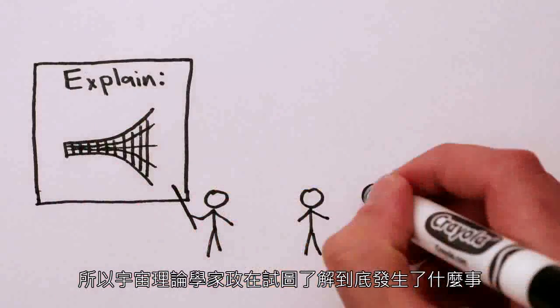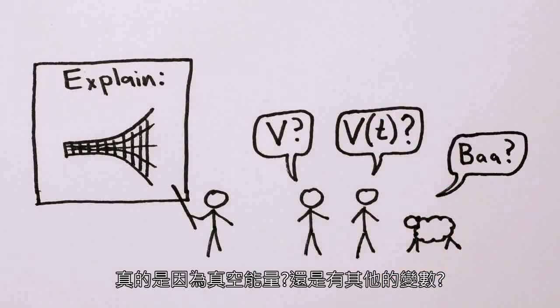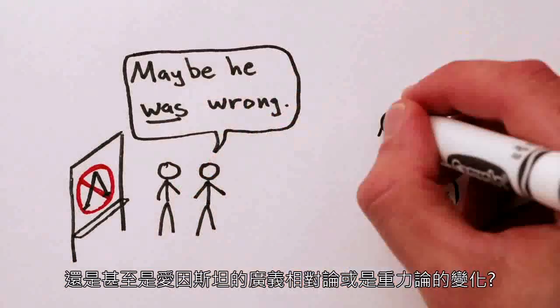So theoretical cosmologists are trying to understand what could be going on. Is it really vacuum energy? Is it some variation of that? Or is it even a modification of Einstein's general relativity, our theory of gravity?